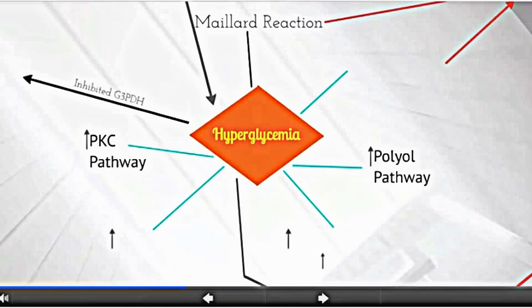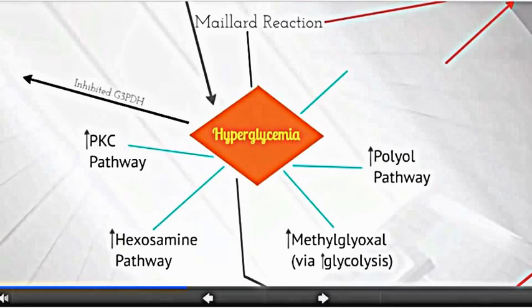These pathways include increased polyol or aldose reductase pathway, increased protein kinase C activity, increased hexosamine pathway, and increased production of reactive carbonyl methylglyoxal.